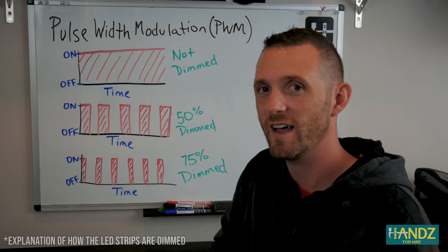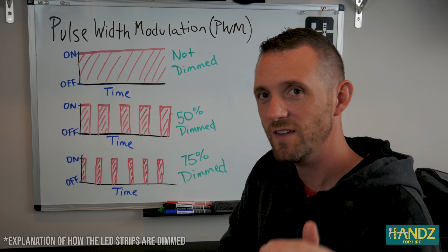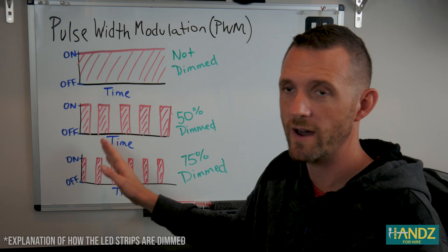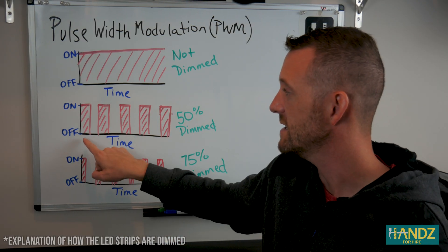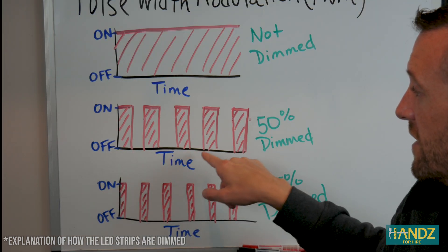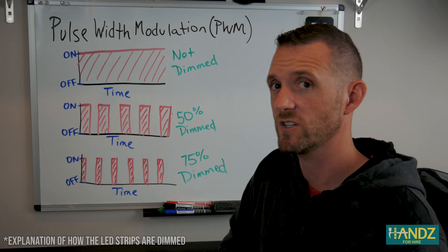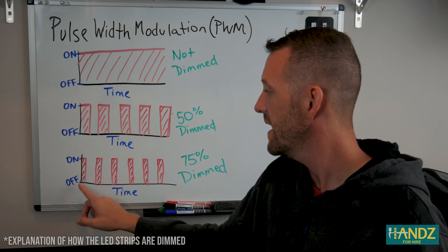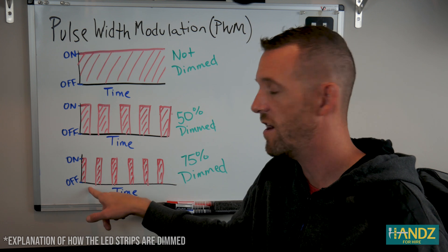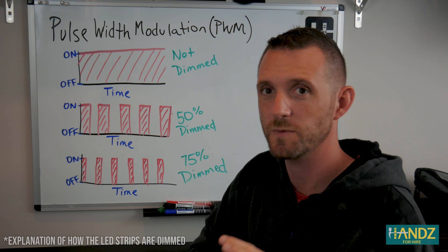For example, if Stephen's under cabinet lights are on all the way and not dimmed at all, then it doesn't pulse at all. But if Stephen dims his lights down to about 50%, the driver starts to pulse the current through the circuit — it's on for half the time and off for half the time: on, off, on, off. And even lower — if the lights are dimmed to about 25% — then the lights are only on for 25% per cycle and off for 75% of the cycle. It does this cycle about 100 to 300 times per second, so to our eyes we don't pick up the flicker.